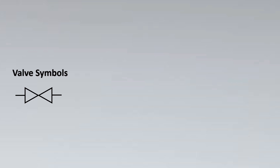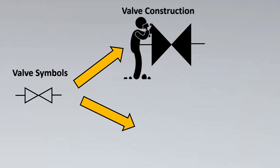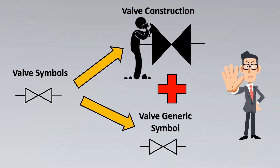The first thing for valve symbols is to find out that valve symbols require two important parameters. We need to understand the construction and working of the valve, plus we need to understand what is the generic symbol. When we add both of them together, we will get to know each and every valve symbol and there is no need to memorize any symbol. So let's start by logically understanding each and every valve symbol.